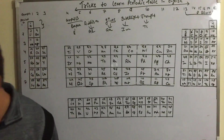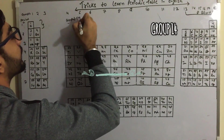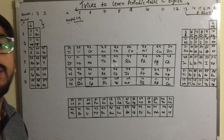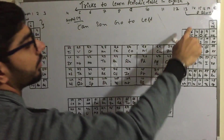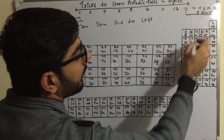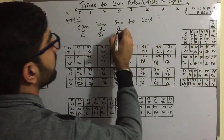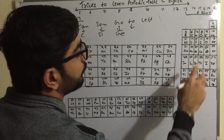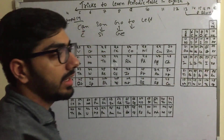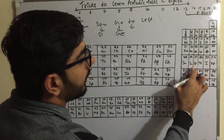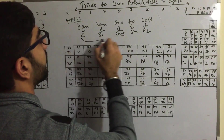Group 14 is also very important. The mnemonic is: 'Can son go to left.' 'Can' means Carbon, 'son' means Silicon, 'go' means Germanium (Ge), 'to' means Tin (Sn), and 'left' means Lead (Pb). This is how you can learn Group 14.